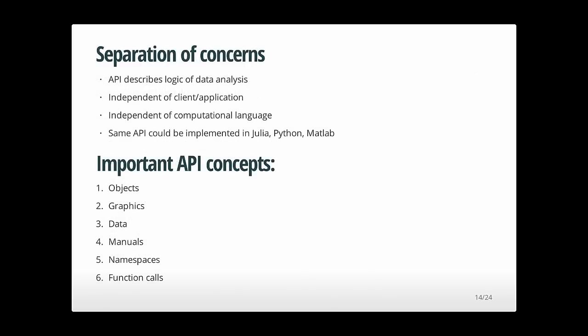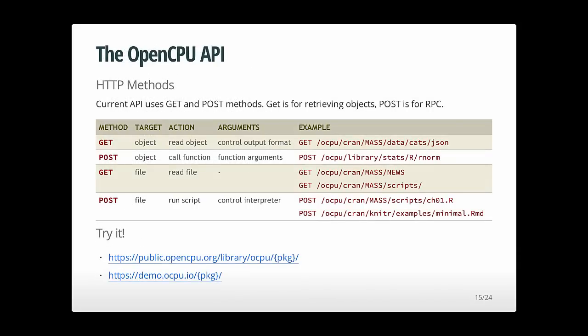To round up: the OpenCPU API doesn't describe any client-specific logic or R-specific logic. It's an interoperable API you can use from any client in any language — it speaks HTTP and JSON, but you can also implement the server in other languages. The API describes concepts generic to data analysis and functional languages, such as graph data, annuals, namespaces, and so forth.